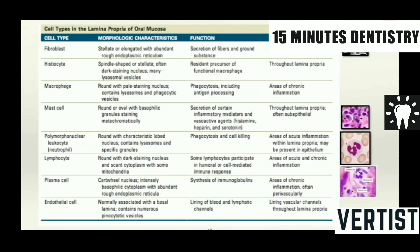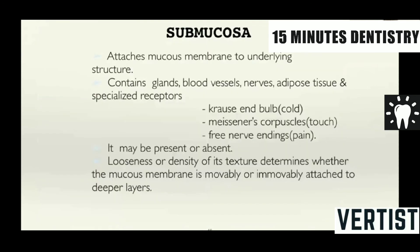Fibroblasts are present throughout the lamina propria and they secrete the ground substance and fibers. Histiocytes are present throughout the lamina propria — these are a type of macrophage, functional macrophages. Mast cells are associated with inflammatory mediators like heparin, histamine and serotonin. They are also present throughout the lamina propria. Apart from these, we have the different blood cells — polymorphonuclear leukocytes, lymphocytes, plasma cells and endothelial cells. Below the lamina propria, you have the submucosa. The epithelium and mucosa attaches to the underlying structure through the submucosa. This particular structure contains glands, blood vessels, nerves, adipose tissue and specialized receptors — Krause end bulbs for cold reception, Meissner's corpuscles for touch, and free nerve endings for pain. It may be present or absent in different parts of oral mucosa. Looseness or density of the structure determines whether the mucosa is movable or immovable.